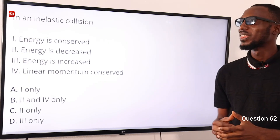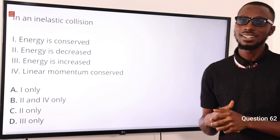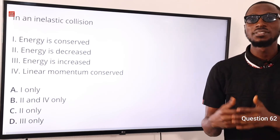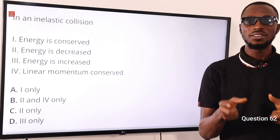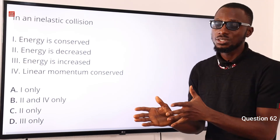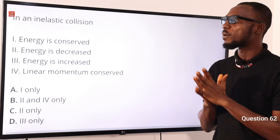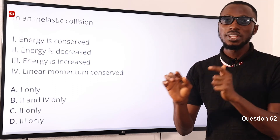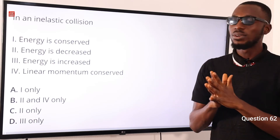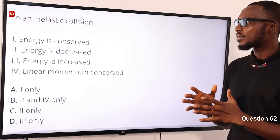Question 62: In an inelastic collision, what happens? In an inelastic collision, the colliding bodies stick together. After collision, the kinetic energy decreases. However, momentum is conserved. For both elastic and inelastic collisions, momentum is conserved, but kinetic energy is only conserved in elastic collisions. In inelastic collisions, kinetic energy decreases after the collision.